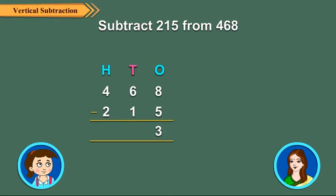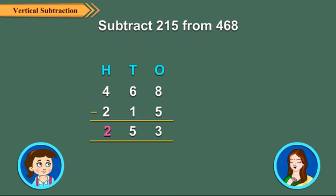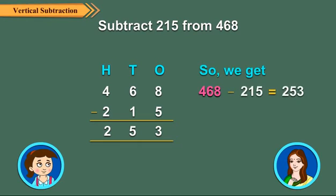Subtract 10's from 10's. 6 10's minus 1 10's is equal to 5 10's. Write 5 under 10's column. Subtract the 100's. 4 100's minus 2 100's. Write 2 under the 100's column. So, we get 468 minus 215 is equal to 253.